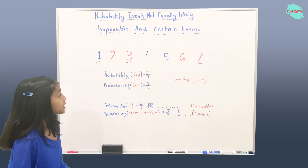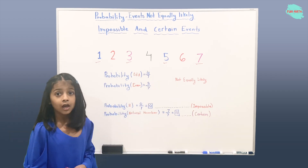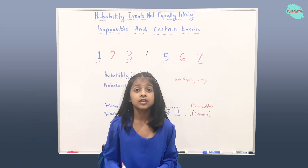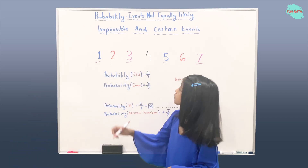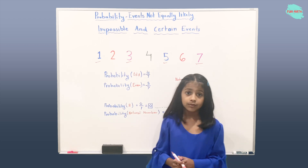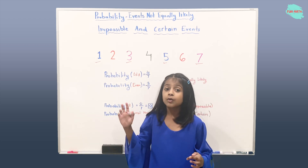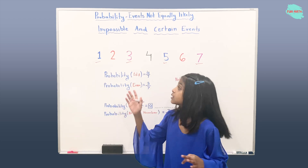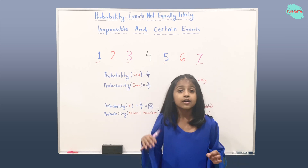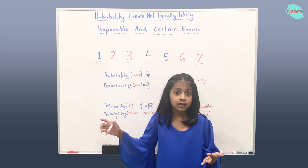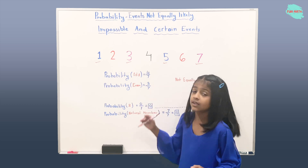Now let's see how we got our denominator as seven. There are seven total numbers here, and the total possibilities are seven. So that's why we have seven as our denominator.